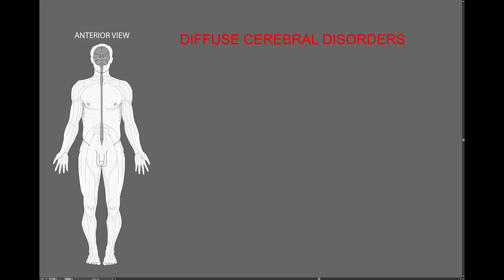In this video, I want to talk about diffuse cerebral disorders. These are disorders that don't just affect one little part of the brain, but affect large areas of the brain diffusely, particularly this outermost layer of the brain, the cerebral cortex.